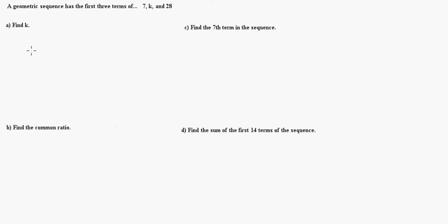If I look at the definition of geometric sequences, you can divide two consecutive terms and you will get the common ratio. So, in this case, I can do K divided by 7 equals 28 over K. Now, if I cross-multiply, this is a proportion or equivalent fractions, I get K squared equals 196.